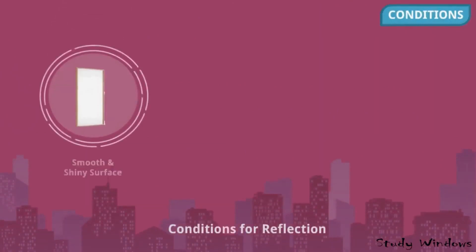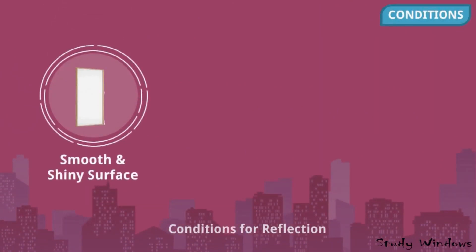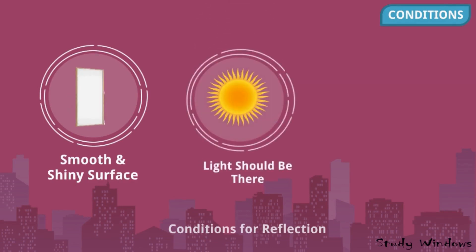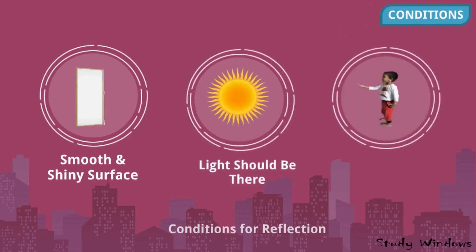The conditions for reflection: the object where reflection happens should have a smooth and shiny surface, like a mirror, water surface, or shiny metals. There should be light, and the object should be opaque.